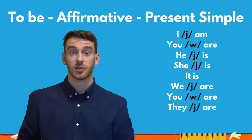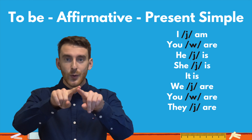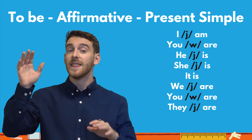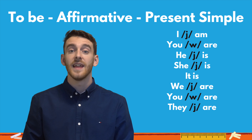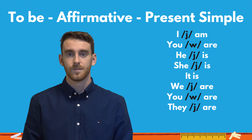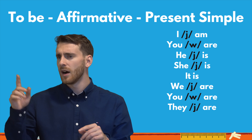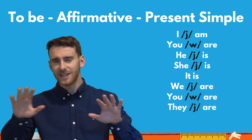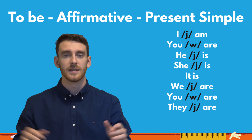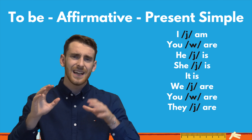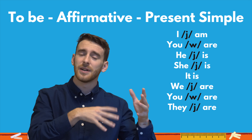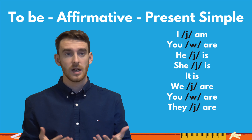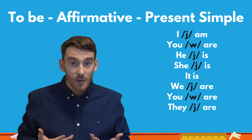You are — plural, same as singular — you are. They are. Repeat. They are. Fantastic. Not 'they are' — they are. Okay, gentle, relax. They are. Very good. So that's the regular form, but we also have the contracted form, which is more common when speaking.